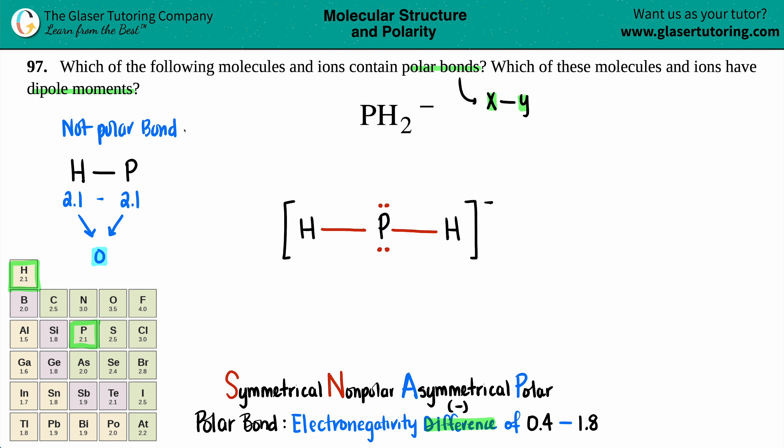This is nonpolar. Nonpolar means that it's completely symmetrical. It's everybody sharing nicely. As much as hydrogen shares the electrons, phosphorus shares the electrons as well. So in this case, we know that we do not have polar bonds. We instead have nonpolar bonds.